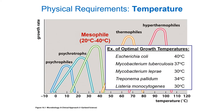As examples: E. coli is normally found in the colon and is grown in the lab at about 37 degrees Celsius, though its highest growth rate is actually around 40 degrees. Mycobacterium tuberculosis prefers body temperature. The mycobacterium that causes leprosy prefers things a bit cooler and tends to be found in the extremities, which are cooler.